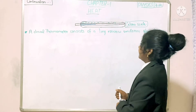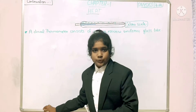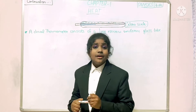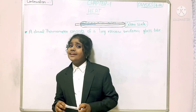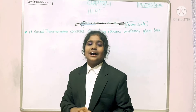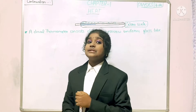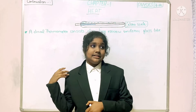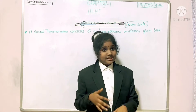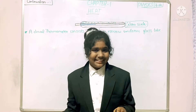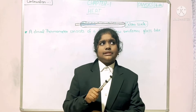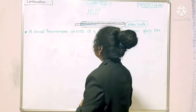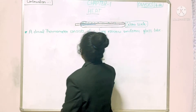Today we are in part two, the continuation. What did we study? We studied what temperature is, the device used to measure temperature, the difference between hot and cold, and we took an activity to show that sense of touch is not reliable. Then we studied the device used to measure temperature — it is called a thermometer.